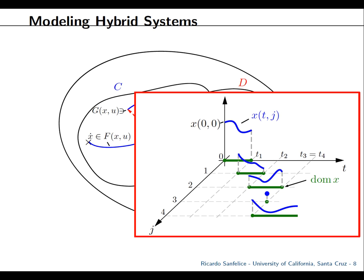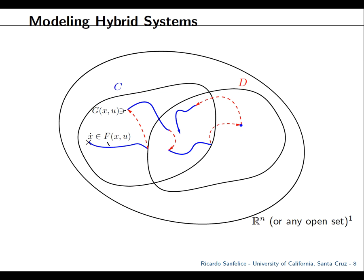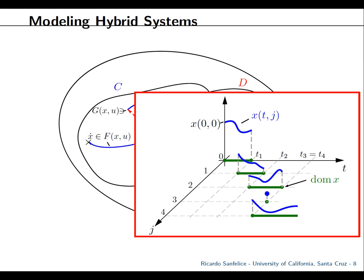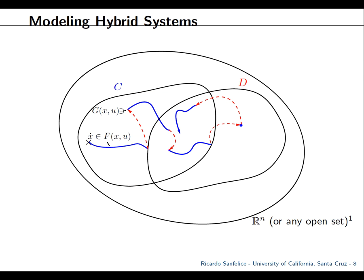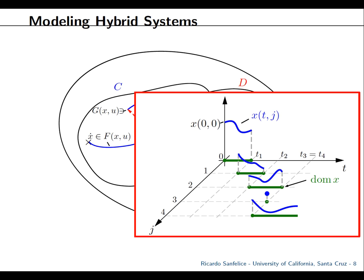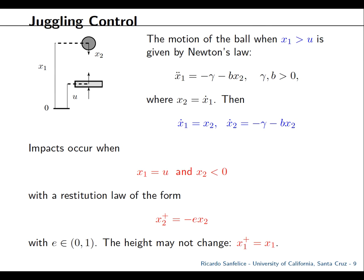A trajectory starting at initial condition (x0, 0) will flow for the first piece, then when it jumps the counter increments, then it flows again, and at some point may jump twice. This function of t and j is defined on a specific hybrid time domain — a particular structure called the hybrid time domain indexed by j.